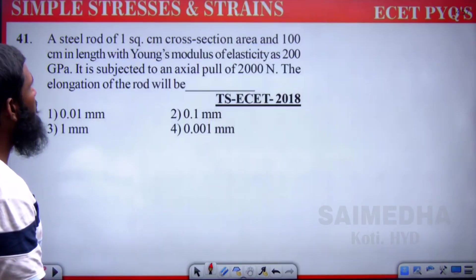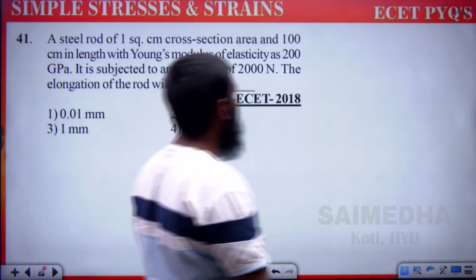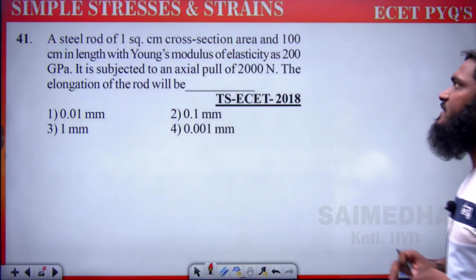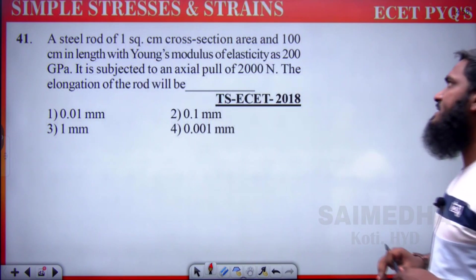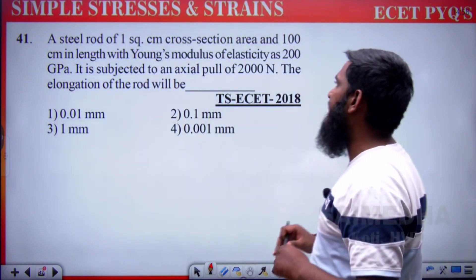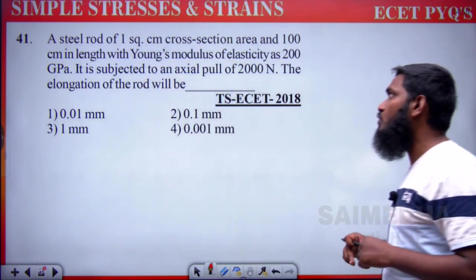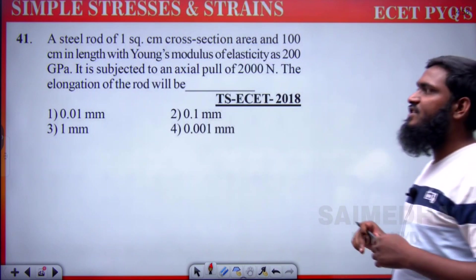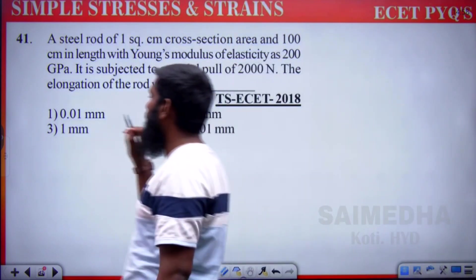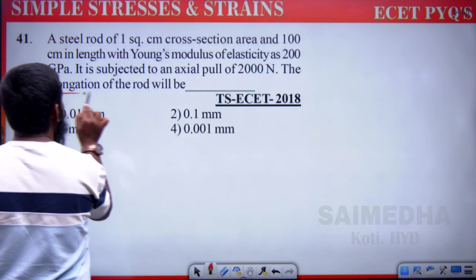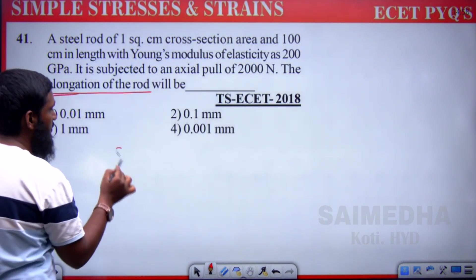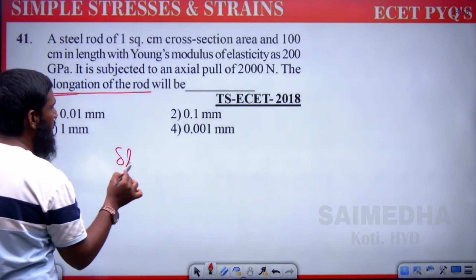A steel rod of 1 square centimeter cross-section area and 100 centimeter length, with Young's modulus of elasticity as 200 gigapascal, is subjected to an axial pull of 2000 newtons. The elongation of the rod — we have to find out delta L.